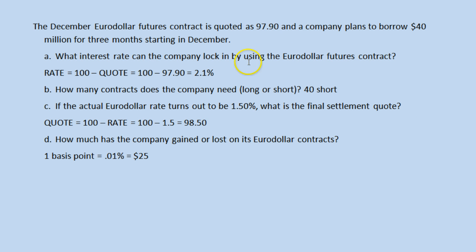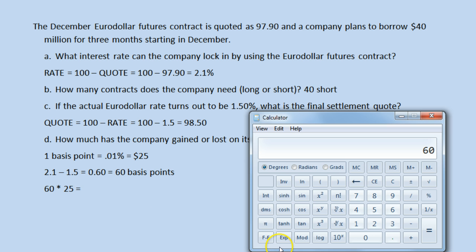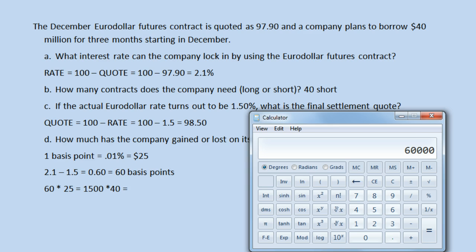In this problem, we started with an interest rate of 2.1 percent, and it has changed to 1.5 percent — a change of 0.6 percent. With one basis point equaling 0.01 percent, 0.60 percent is 60 basis points. Each of those 60 basis points represents $25, giving us $1,500 per contract. We have 40 contracts, which equals $60,000.